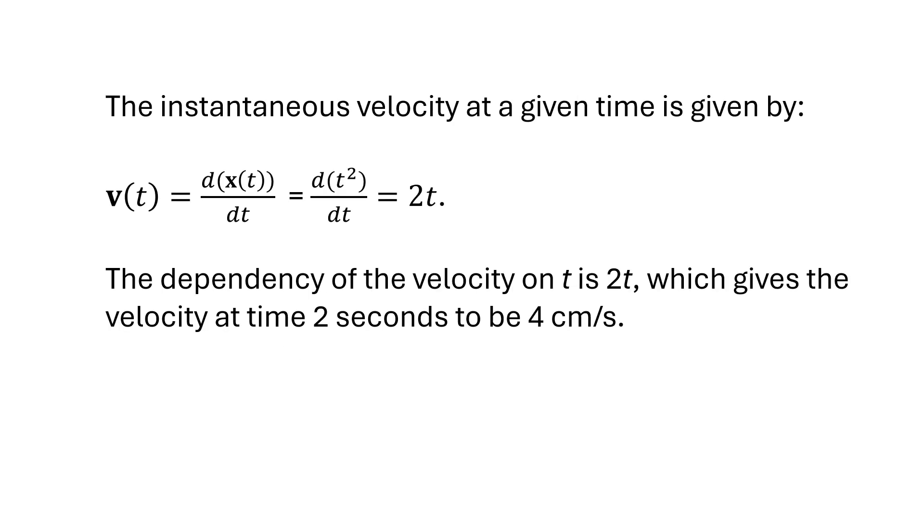The instantaneous velocity at a given time is given by v(t). It's the first time derivative of the displacement with respect to t. In this case, d(t²)/dt, which equals 2t. The dependency of the velocity on t is 2t, which gives the velocity at time 2 seconds to be 4 centimeters per second.